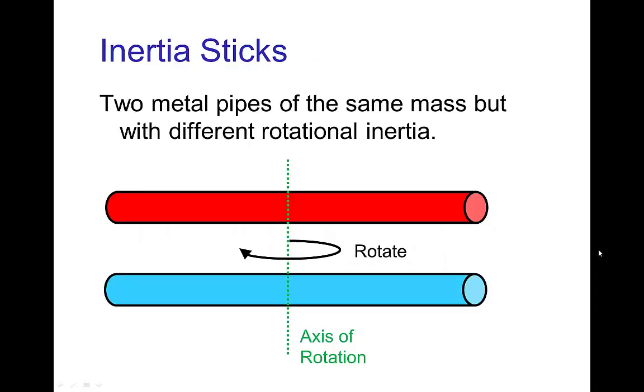So let's start with this example. I have these pipes and the two pipes have the same mass. If you weigh them, they weigh the same, but they have different rotational inertia.